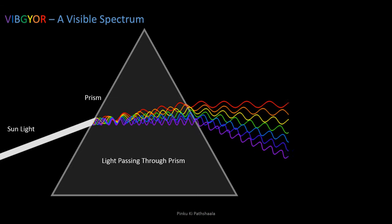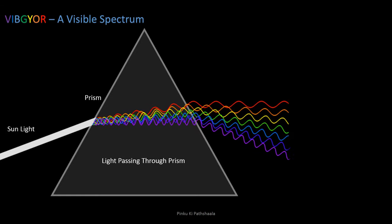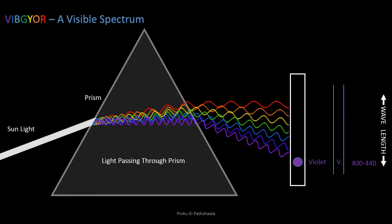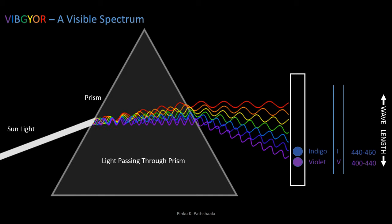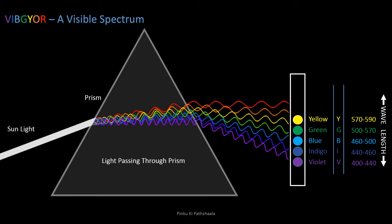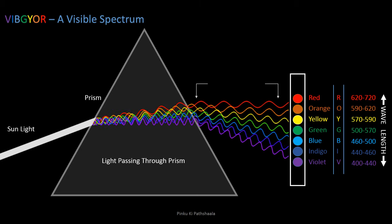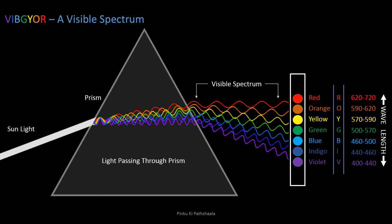You can see when a light passing through a prism, it divides into 7 different colors which are Violet, Indigo, Blue, Green, Yellow, Orange, Red. This 7 color combination is called as visible spectrum.